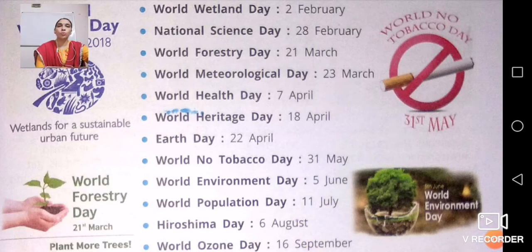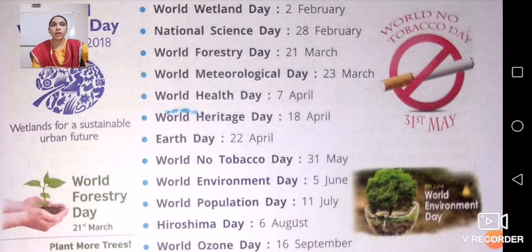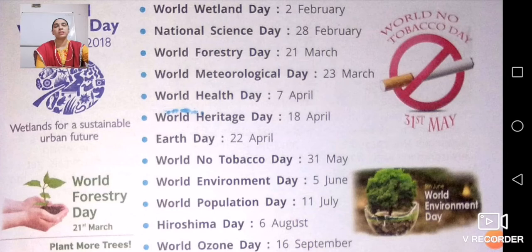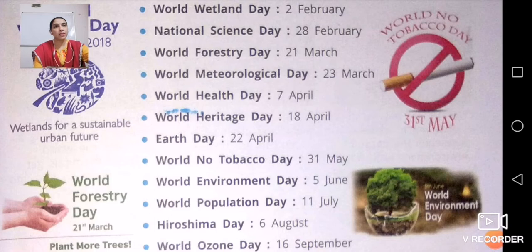World No Tobacco Day is celebrated on 31st May. On this day, people are made aware of the disadvantages of consuming tobacco — many people use tobacco nowadays, and this day is to inform them of its harmful effects. World Environment Day is celebrated on 5th June, to understand how the environment plays an important role in our life.